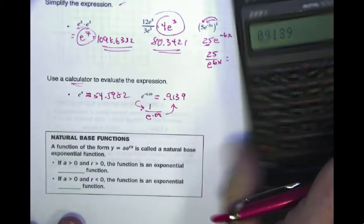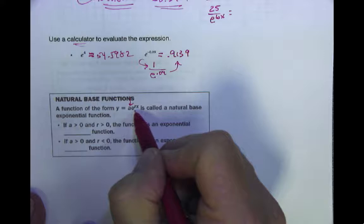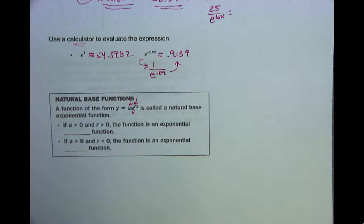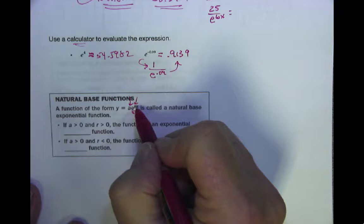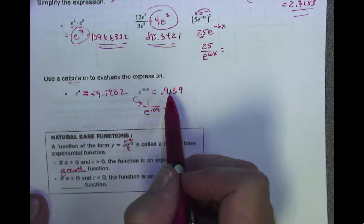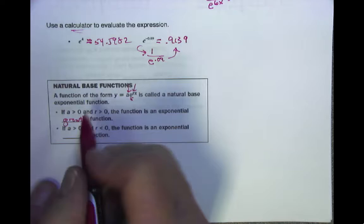Now, a natural base E function has the form y = A times E to the RX. A is like a coefficient — your stretch. E is your base. X is the variable you plug values into. That R determines if it's a growth or decay function. If A is greater than 0 and R is greater than 0, it's a growth function. If R is less than 0 — a negative number — then it's a decay function.